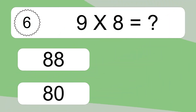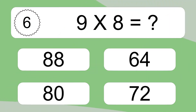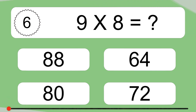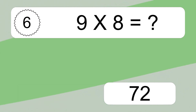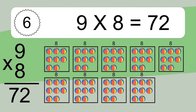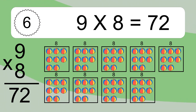9 times 8 equals what? We have 9 boxes, and each box has 8 colorful balls inside. If you count all the balls in all the boxes together, you will have 9 times 8 balls. This equals 72 balls.